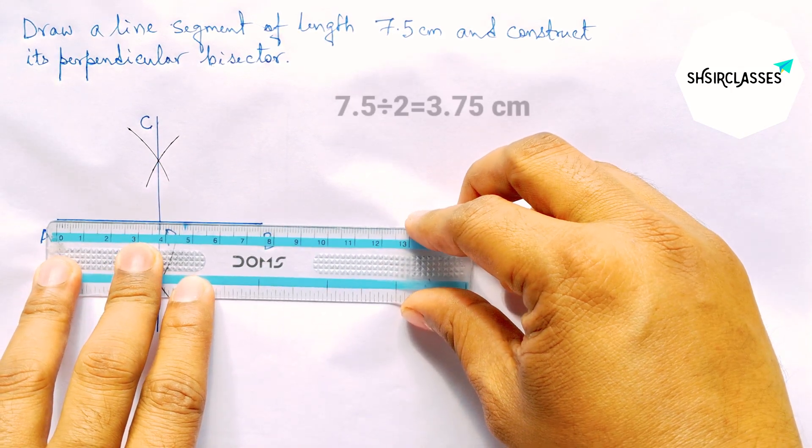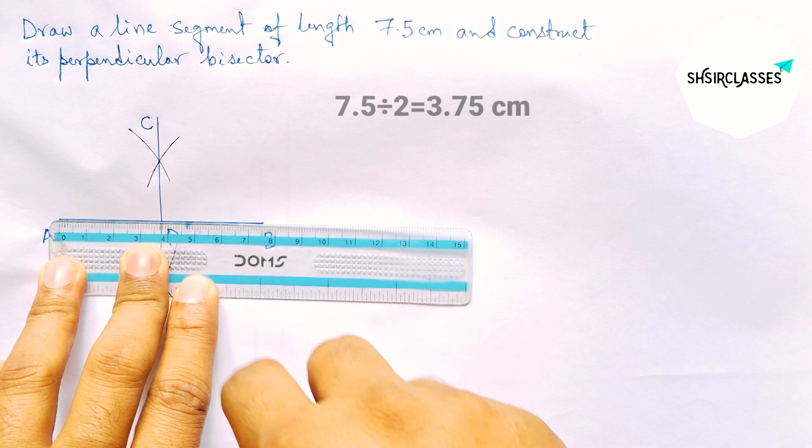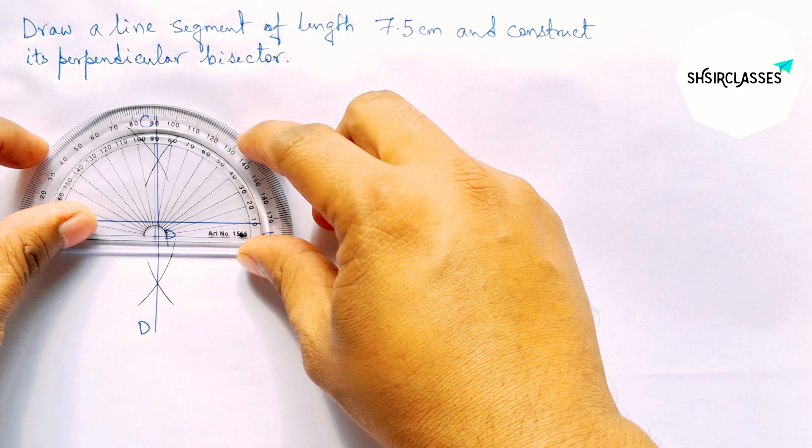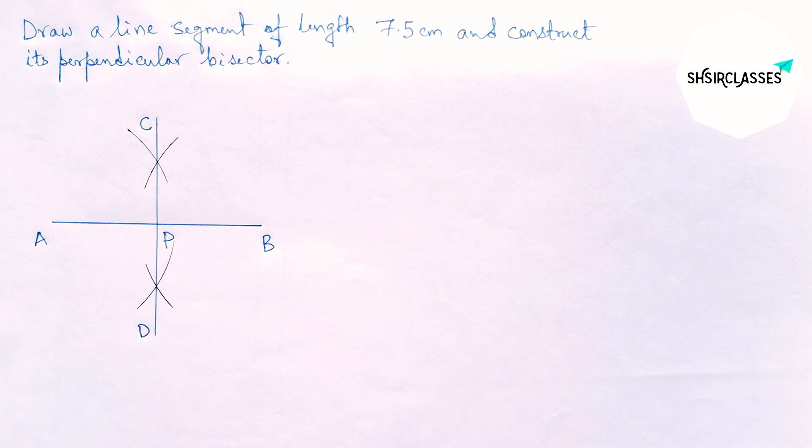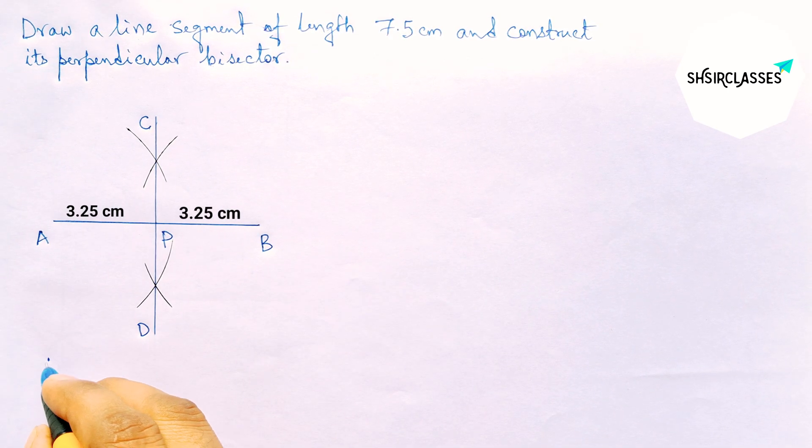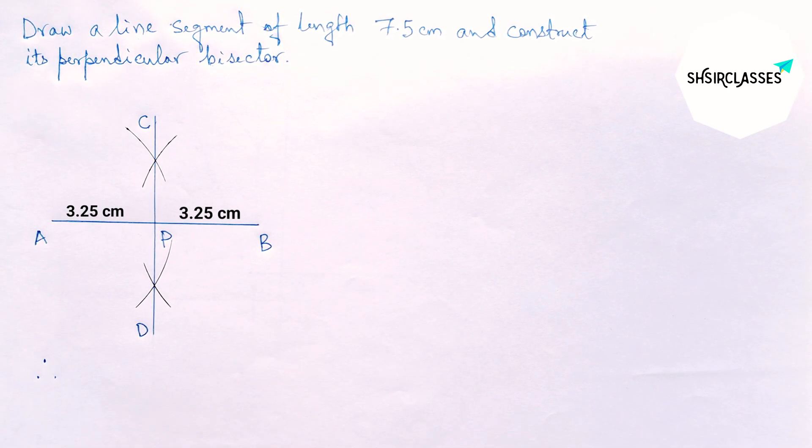Now checking CD bisect AB perfectly. And here this is 90 degrees, that means it's perpendicular. So therefore here CD.